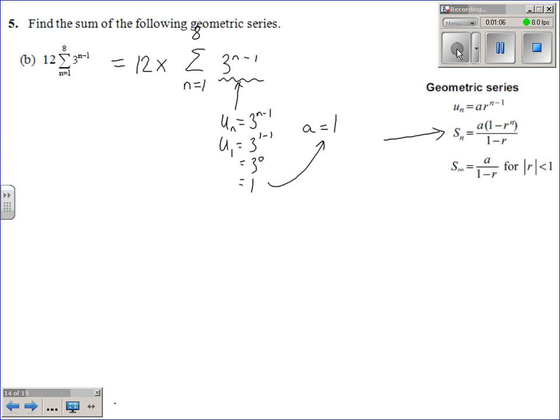If you need to work out the ratio, all that you need to do is understand that un in general is given by a times r to the power of n minus 1, and your un here is given by 3 to the power of n minus 1. If you compare these things,